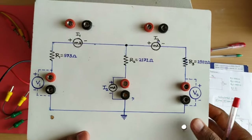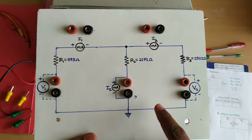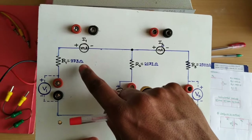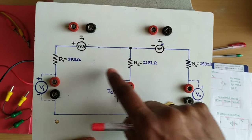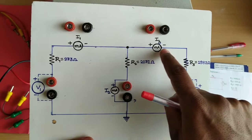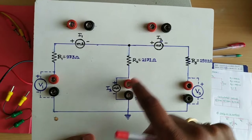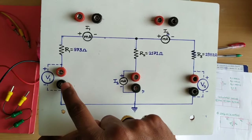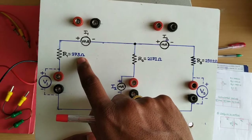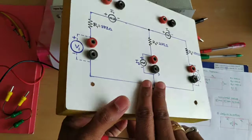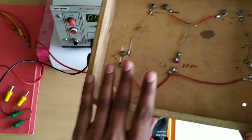For this experiment we are using the same experimental setup previously used for Thevenin's and Norton's theorem. The setup has three resistances R1, R2, and R3. Connections are provided for ammeters to measure currents I1, I2, and I3 flowing through R1, R2, and R3 respectively. Two different voltage sources can be connected from each side, and the resistance values have already been measured using an ohmmeter.